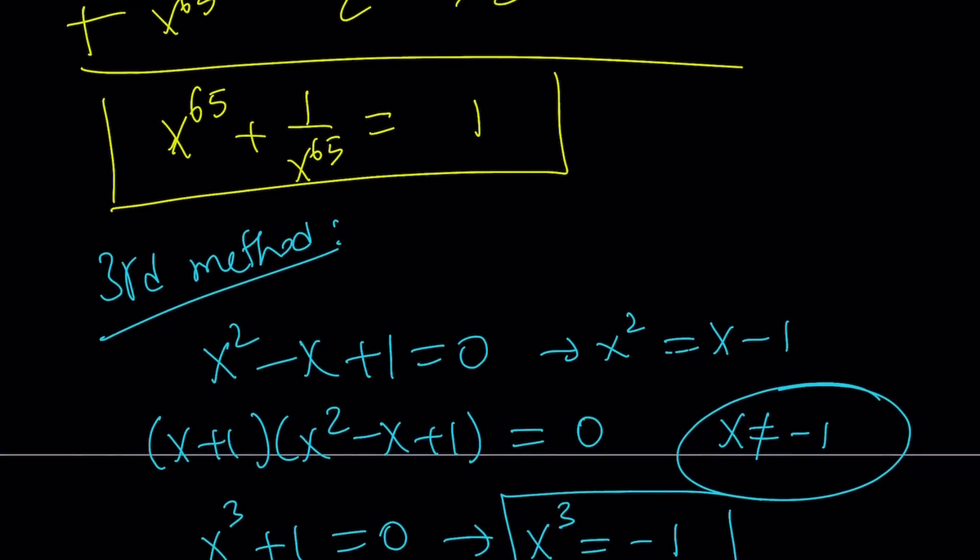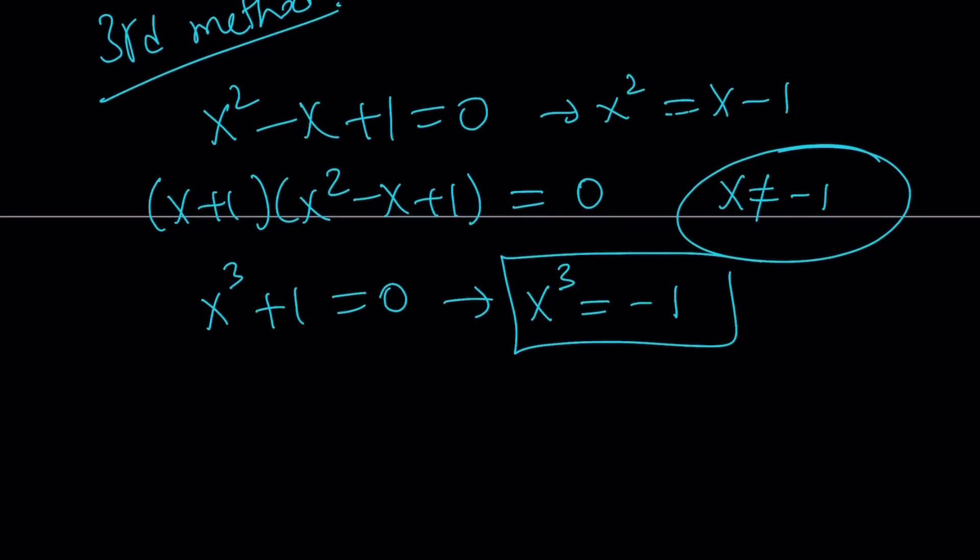So let's go ahead and take a look at the following. x to the 65 can be written as x to the power 3 to the power 21, which gives us x to the power 63. I just need to multiply by x squared. That comes up again, but that's okay. x cubed is negative 1. Negative 1 to the power 21 is negative 1. So this is equivalent to negative x squared. But x squared is x minus 1. So negative x squared is 1 minus x, which is the opposite of x minus 1.